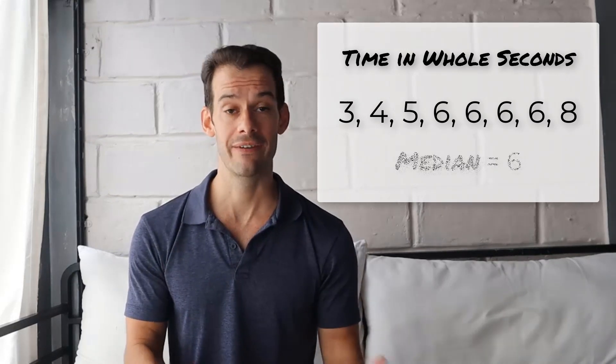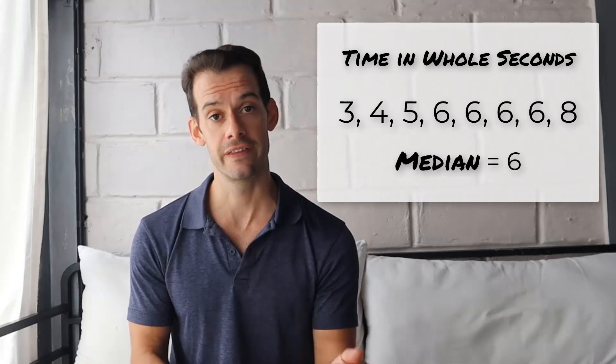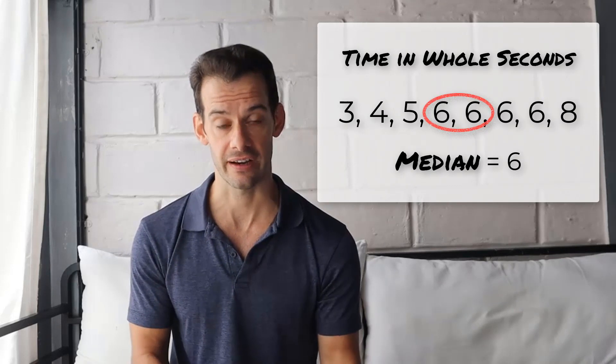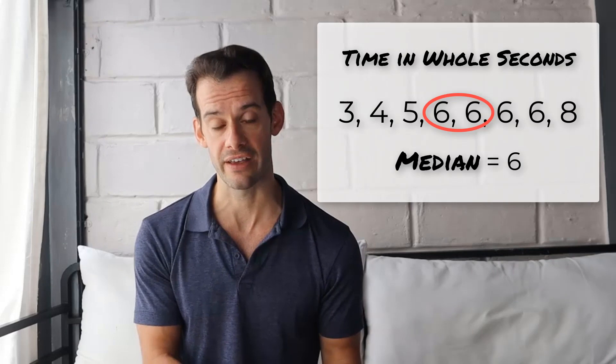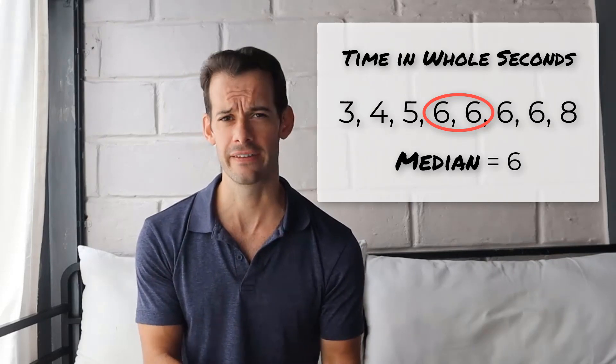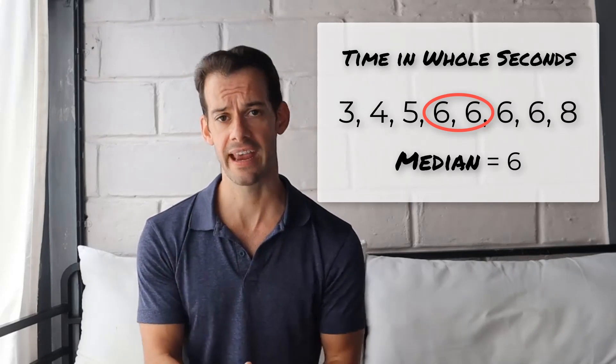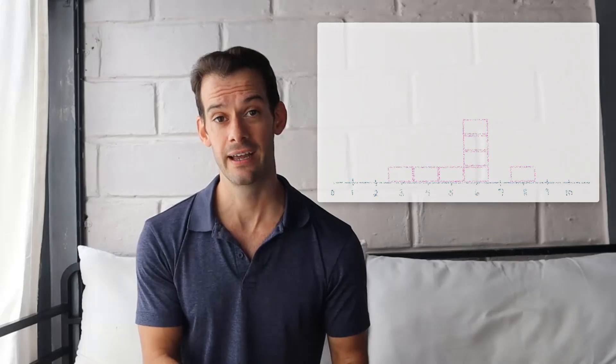Our simple median method would give us a median of 6, the mean of the two middle scores, 6 and 6. But this actually isn't the precise middle of our data because we have all these repeated scores at 6. So how do we find this precise point? This is a case where I think visualizing the data can help us to understand.